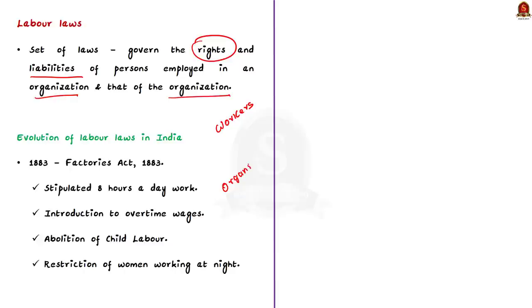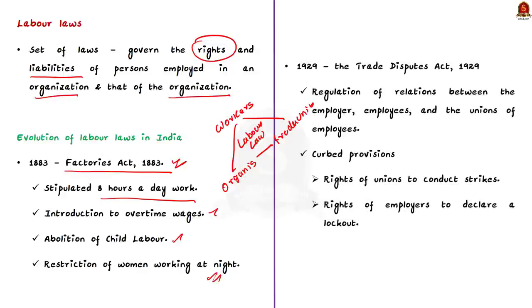Let's see how labor law in India evolved. The history of labor laws in India goes back to pre-independence British era. At that time, labor and industrial laws were enacted by British administration to protect the interest of British employers and industrialists. In 1883, the British Parliament introduced Factories Act 1883. As a result, Indian labor got a stipulated 8 hours work a day, introduction to overtime wages, abolition of child labor and restriction of women working at night. Later, in 1929, the Trade Disputes Act 1929 was enacted to regulate the relations between employer, employee and union of employees. Under this act, the rights of unions to conduct strikes and the rights of employers to declare a lockout was curbed to make sure industrial progress is not halted.